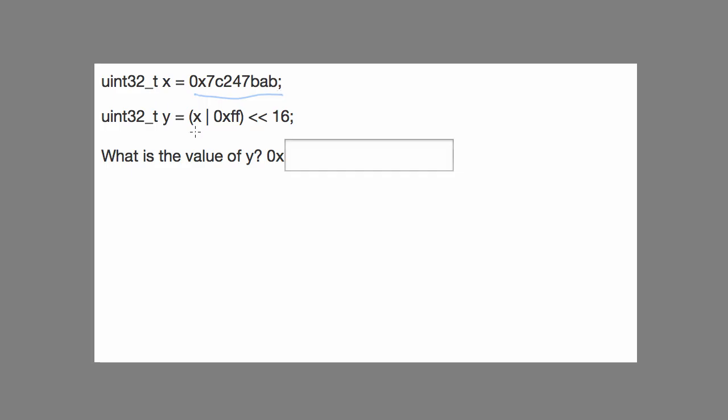We're bitwise ORing that with a constant and then shifting the whole thing 16 bits to the left. Let me show you how that's done. We're first going to take our constant x, which is 7c247bab, and we're going to logical OR in the hexadecimal constant ff.